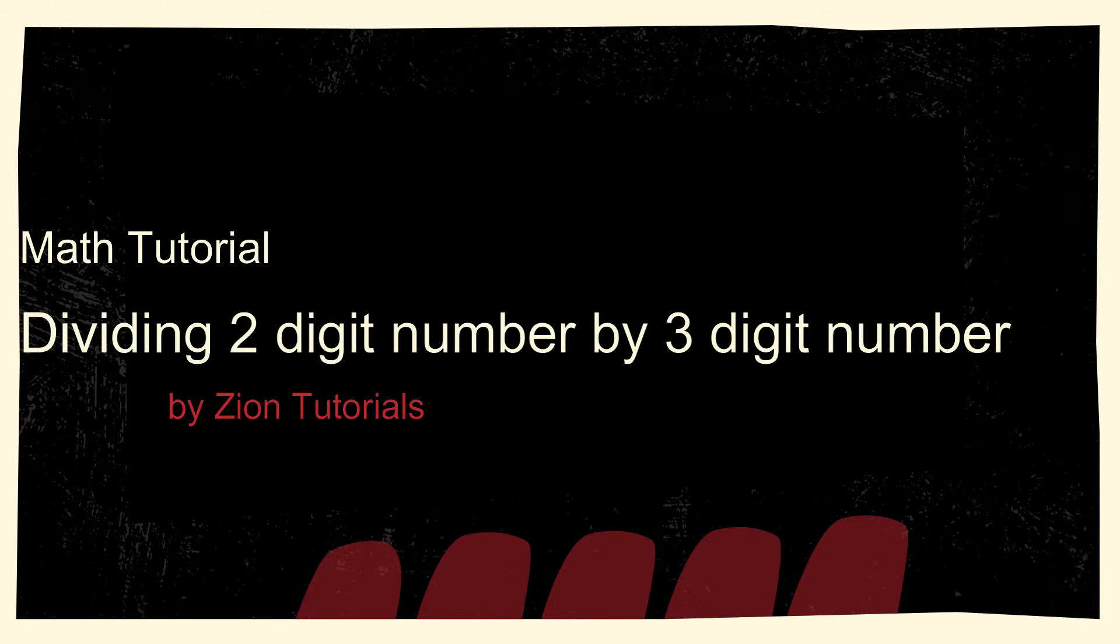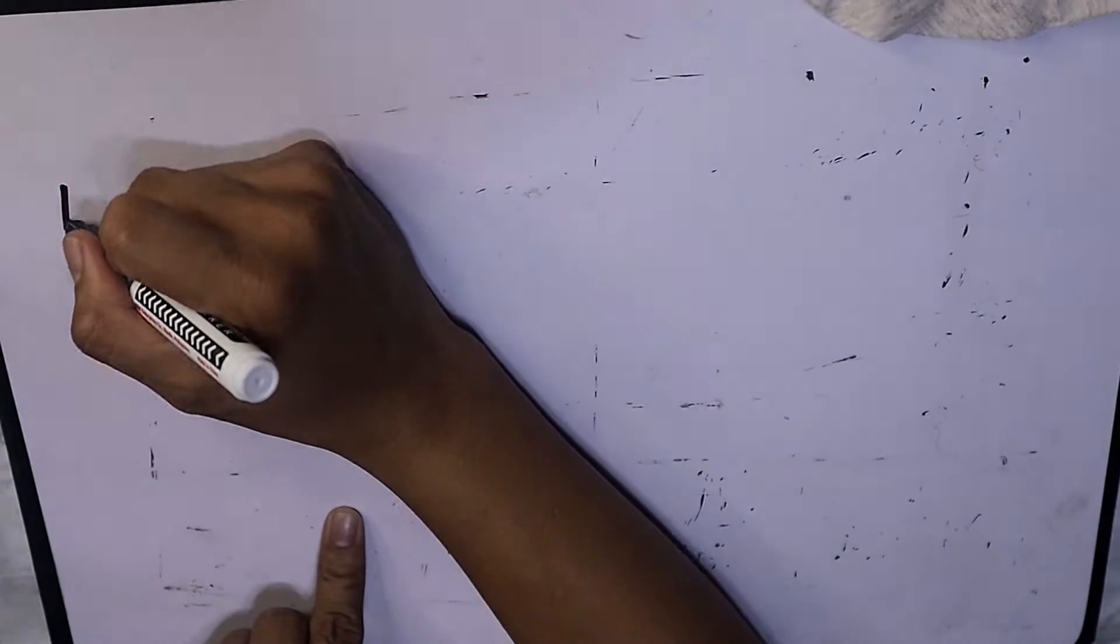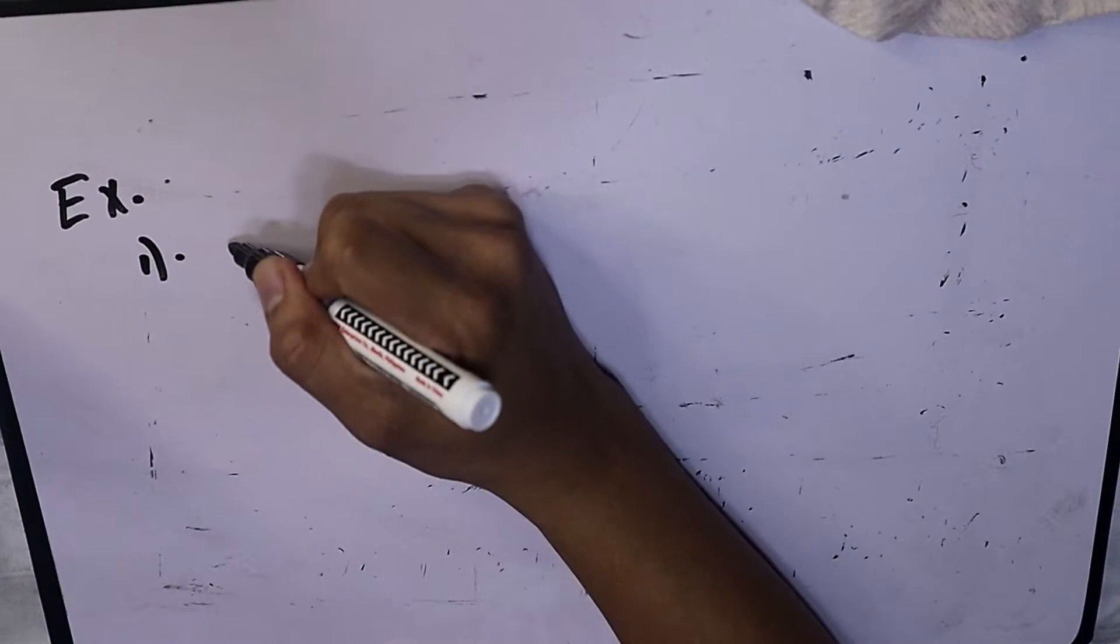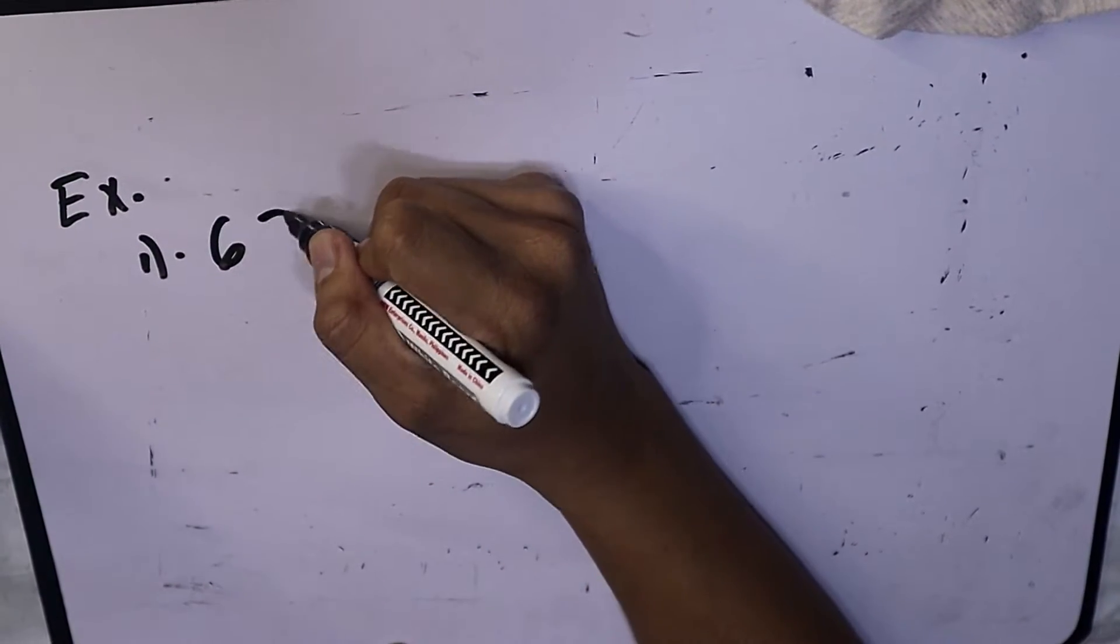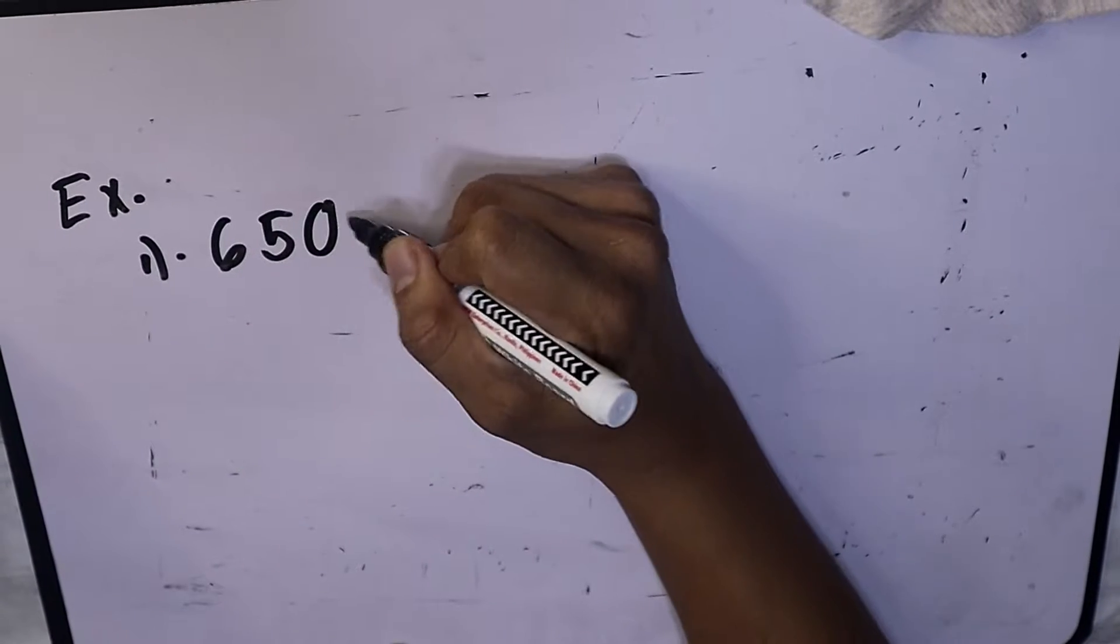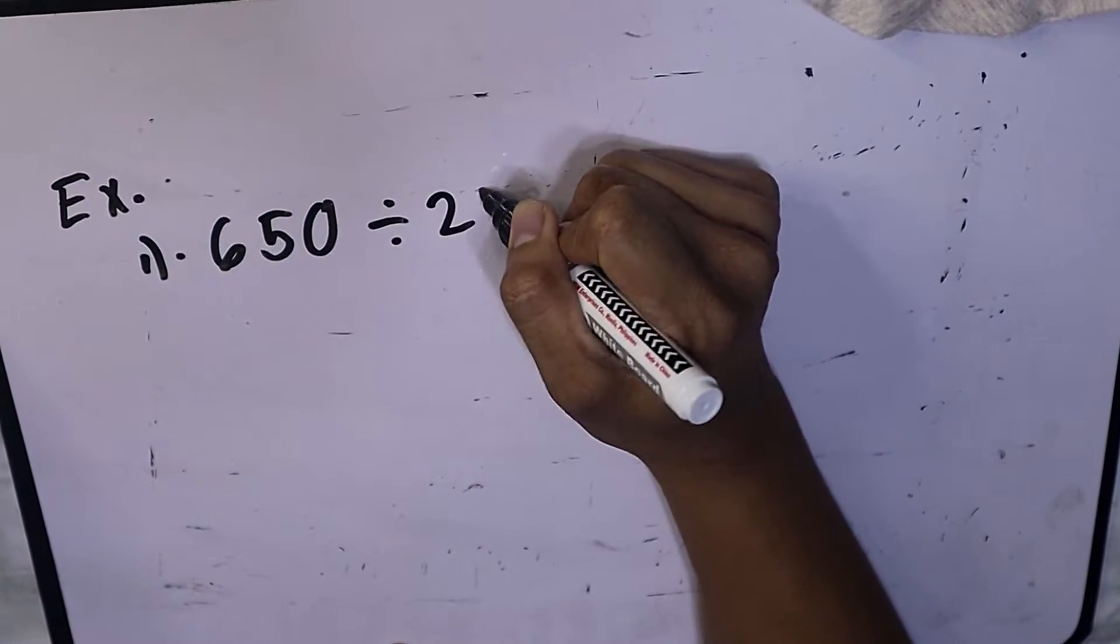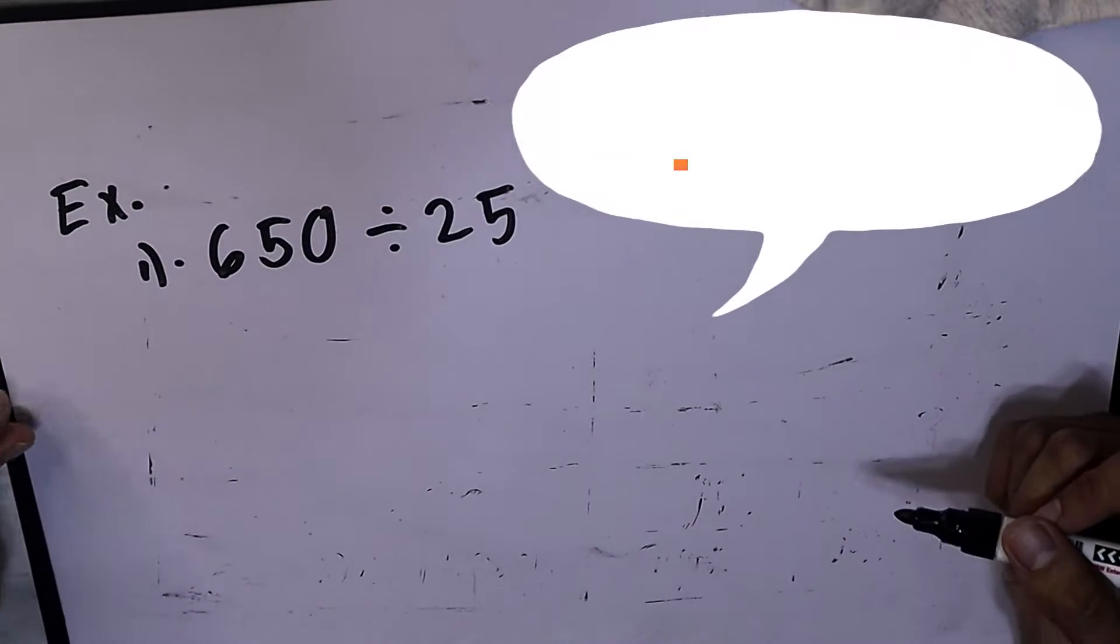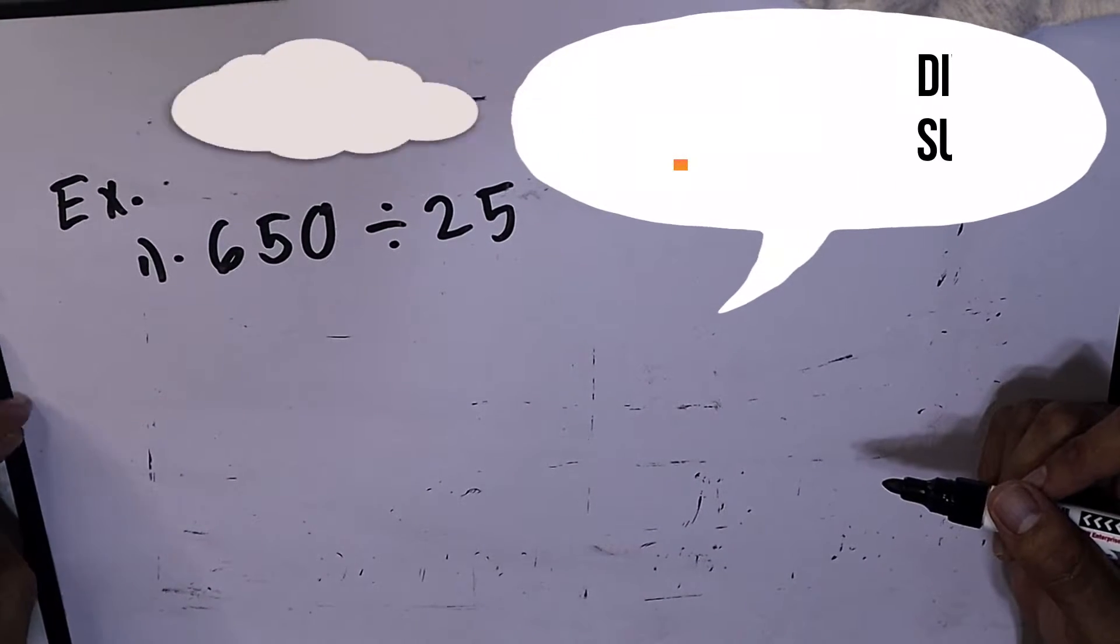Good day everyone, this day we're going to learn dividing two-digit number by three-digit number. So let's have an example: 650 divided by 25.